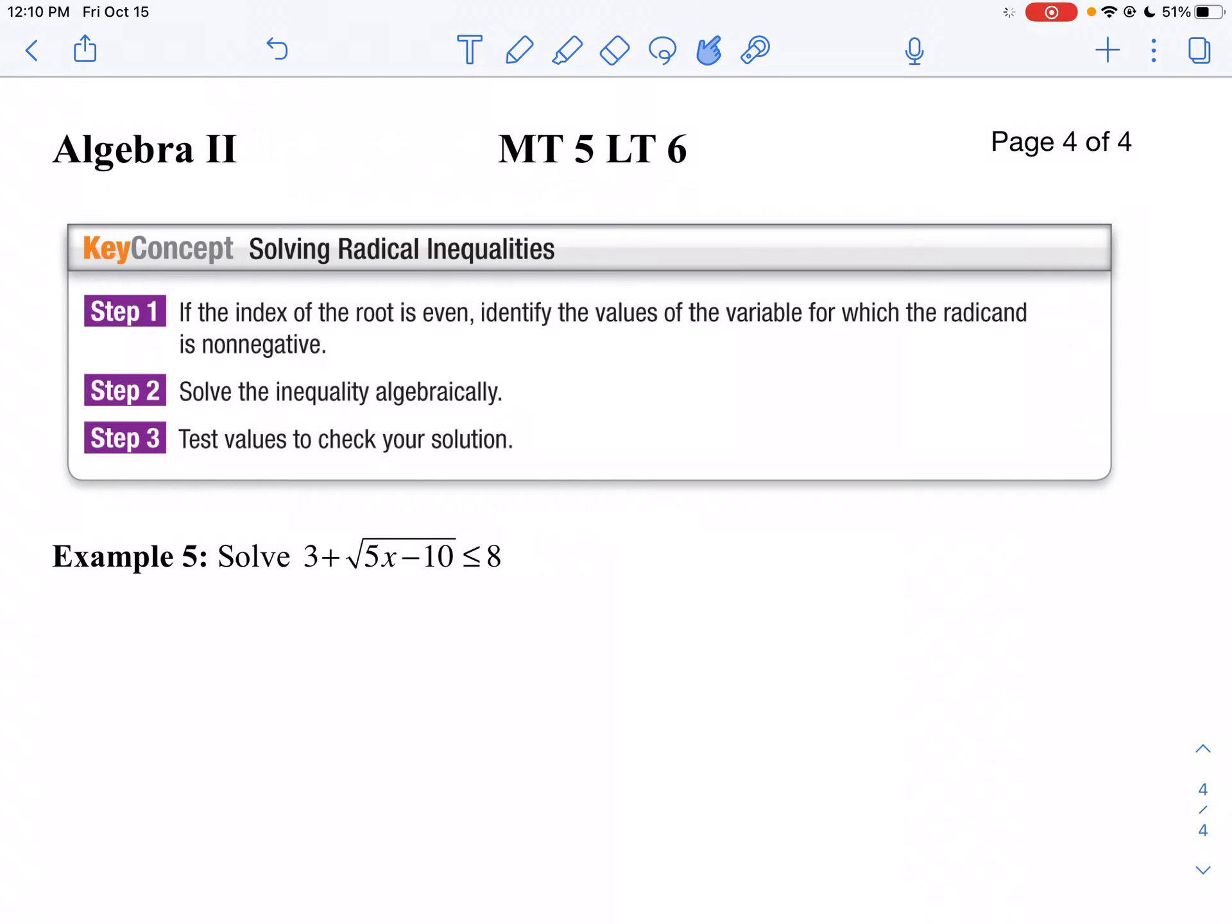If you have a radical inequality, we have one more step. If we have an even root like square root, fourth root, or sixth root, we know we can't take the square root of a negative number. So you have to make sure what's inside is non-negative. If it's an odd root, then we just keep going. We solve it and we check.